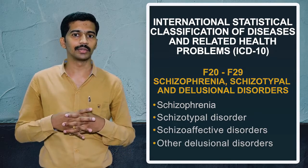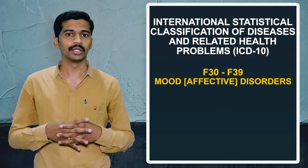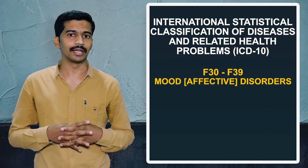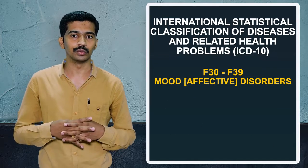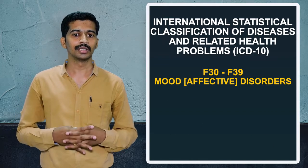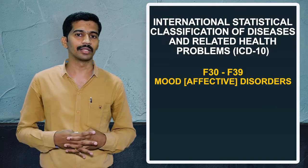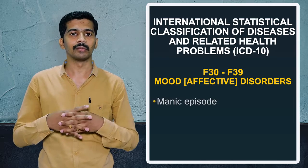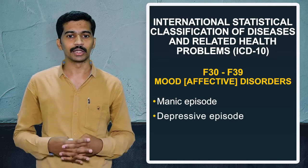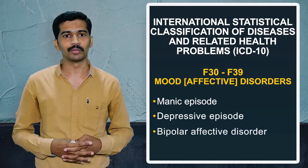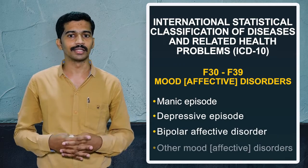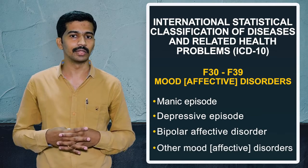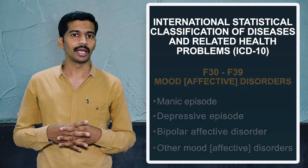The next chapter, F30 to F39, covers mood disorders. In this chapter we can see content related to mania, depression, bipolar mood disorders, and other types of mood disorder.